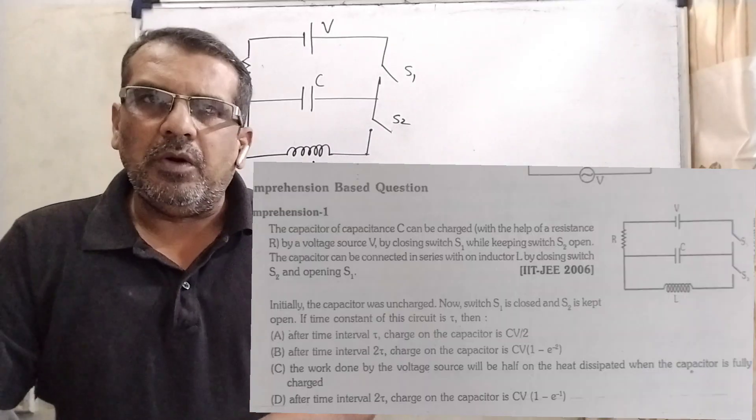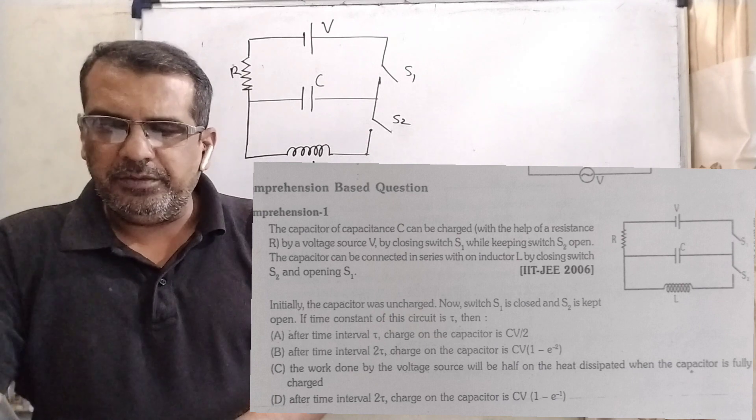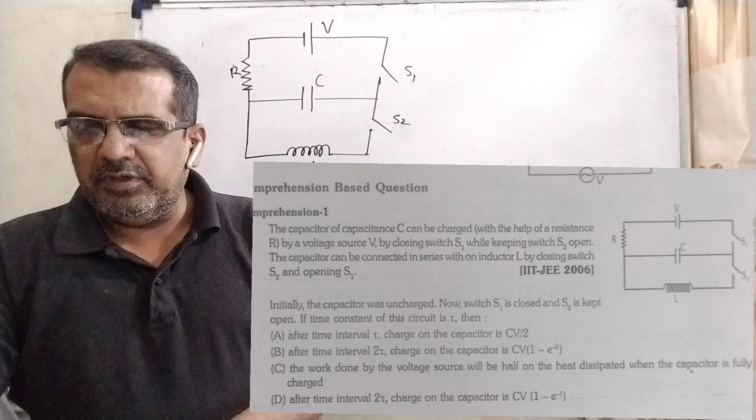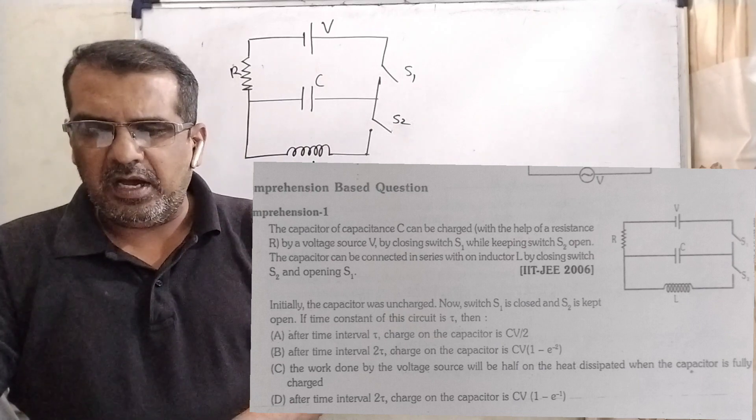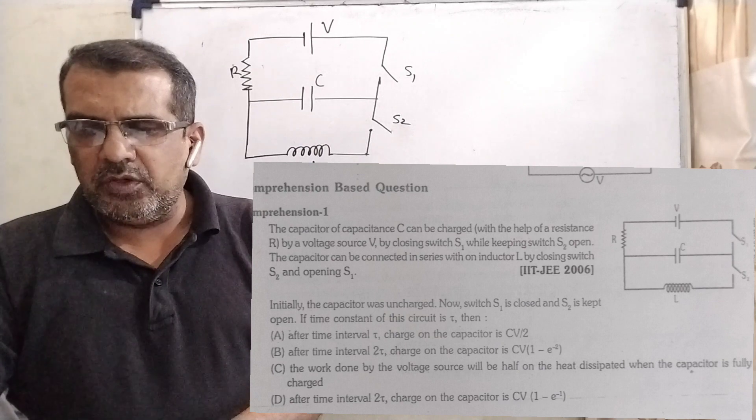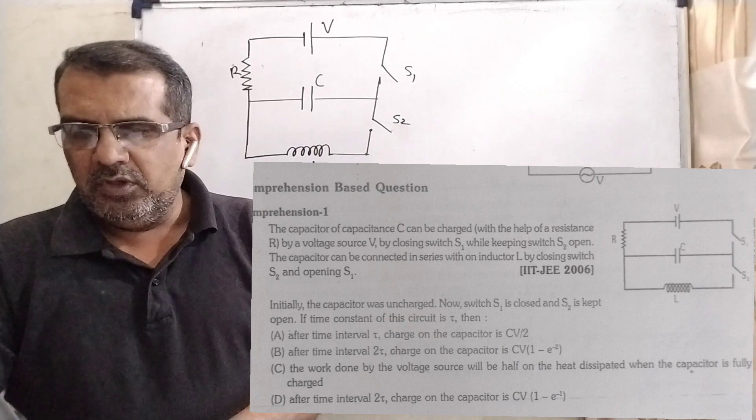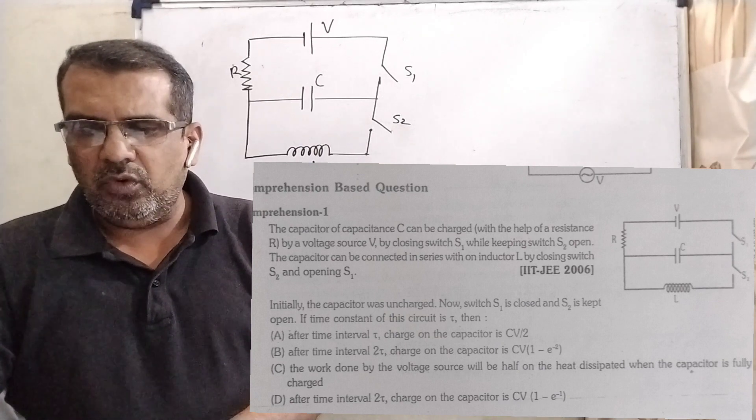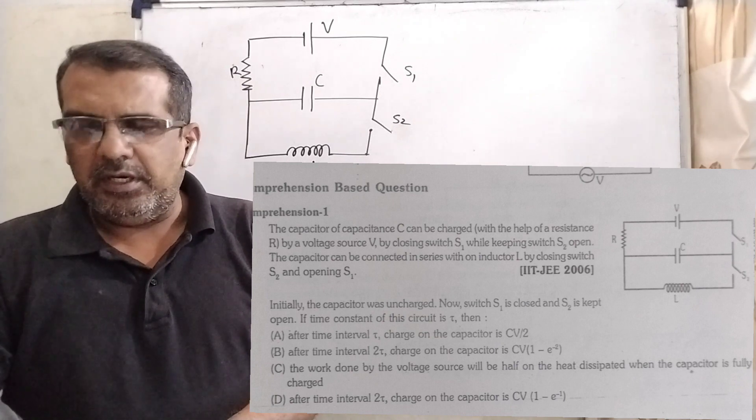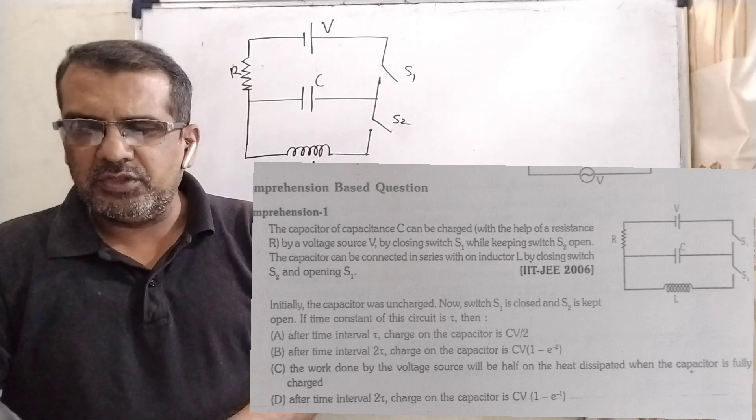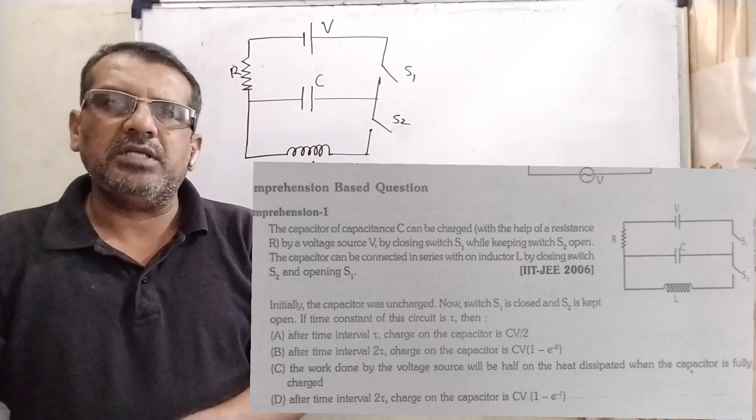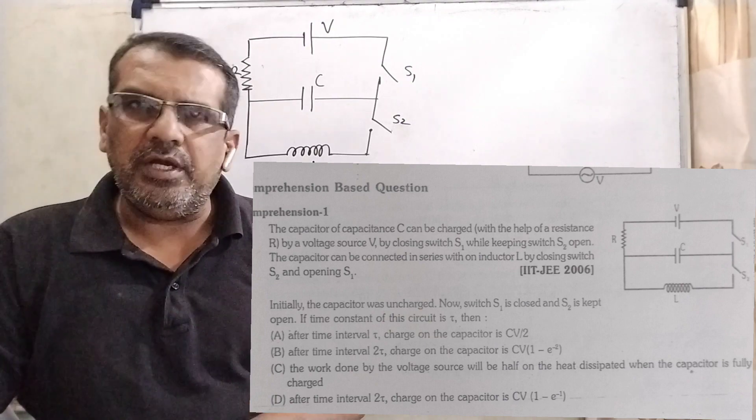Now this is the question. Comprehension-based question means paragraph question. The capacitor of capacitance C can be charged with the help of resistance R by a voltage source V by closing switch S1 while keeping switch S2 open. The capacitor can be connected in series with an inductor L by closing switch S2 and opening S1. And this question is asked IIT JEE 2006.